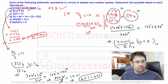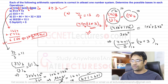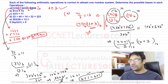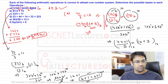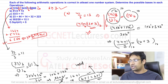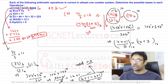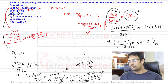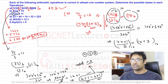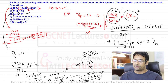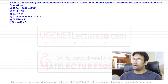Since b + 1 = b + 1 holds for any value of b, this expression is valid for any base greater than 3. The highest digit present is 3, so any base b > 3 makes this expression valid.